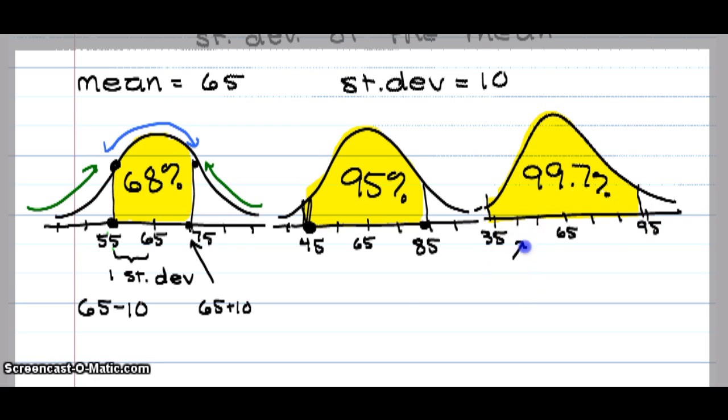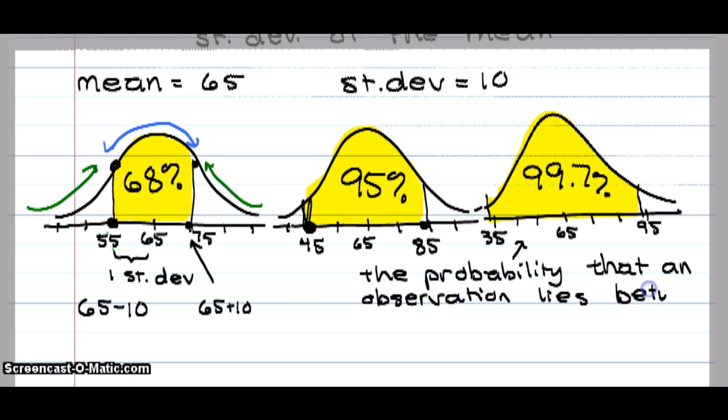This says the probability that an observation lies within three standard deviations of the mean, or in this case, the observation lies between 35 and 95 is 99.7% or 0.997 in decimal.